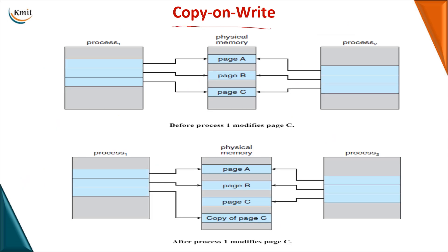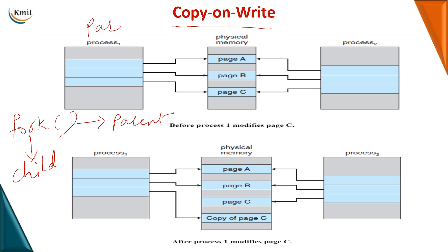The next topic is copy on write. The fork system call creates a child process — the process creating the child is the parent. Initially, if both parent and child execute the same program, the same pages are shared; no separate copy is kept for the child. Both parent and child access the same pages A, B, and C. If during execution the parent wants to modify page C, only the parent creates a copy of page C and modifies it, while the child continues accessing the original page C. Once modifications are done, the copy is written back. This is copy on write — a copy of a page is made only when a process wants to write to it.